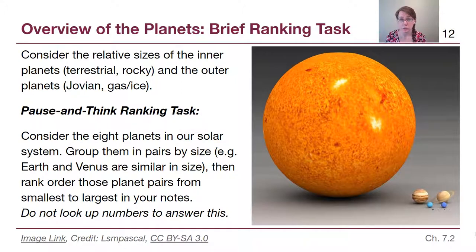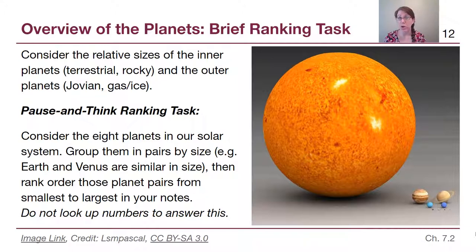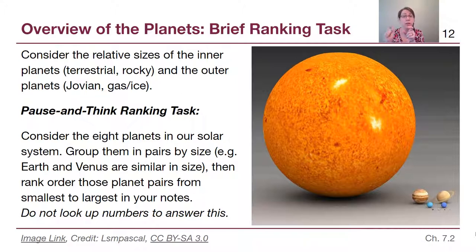Consider the eight planets and group them in pairs by size — I'll help: Earth and Venus are similar in size to each other. Now rank those pairs from smallest to largest. All four inner planets are by far the smallest. Mercury and Mars are the smaller pair, then Earth and Venus, then Uranus and Neptune — the two blue planets — and finally Jupiter and Saturn are by far the largest of the planets.